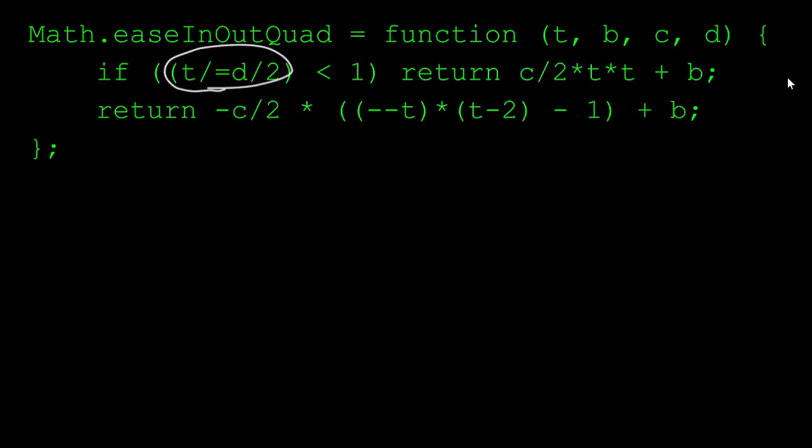First of all, we adjust the t variable like before. But this time, instead of dividing by d, we're dividing by d divided by 2. So instead of a normal value from 0 to 1, this makes a value that ranges from 0 to 2. Now we check if t is less than 1. If so, we're in the first half of the tween, and we do a modified ease in. The modification is that c is divided by 2. This is because we only want to tween half the change in this ease in.